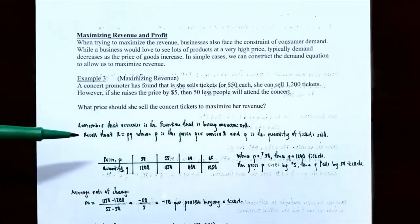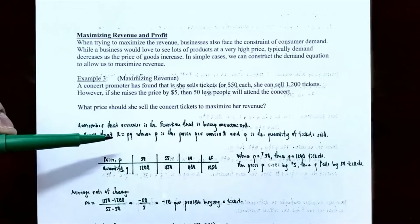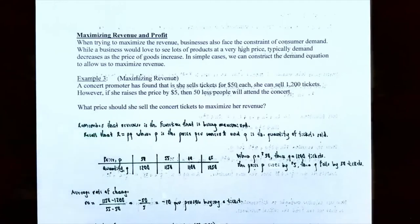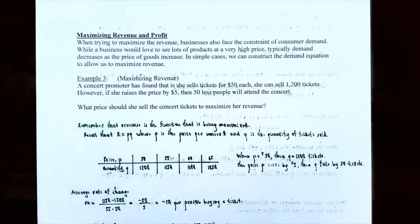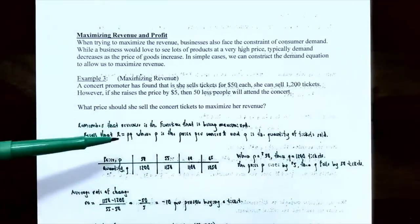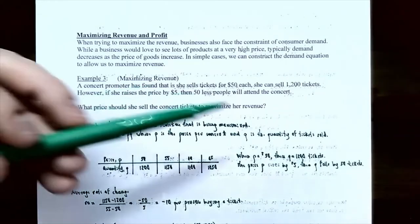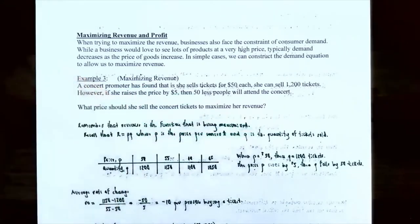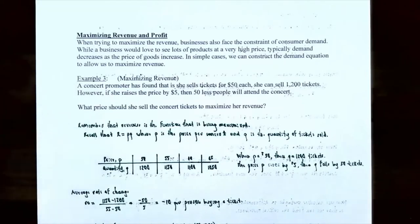Remember how the revenue function is defined: revenue is P times Q. P is the price per concert ticket, and Q represents the quantity — in this case, the quantity of tickets sold. So revenue is always price times quantity. There's information in the problem that relates the price of a ticket to how many tickets are actually sold.